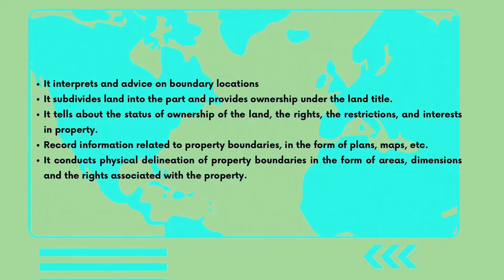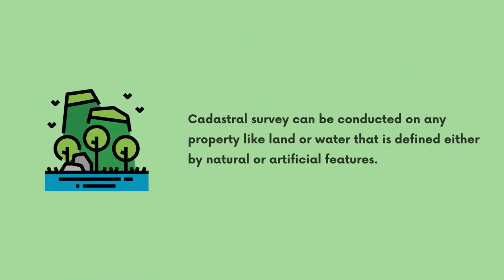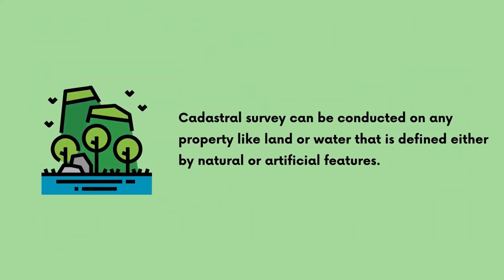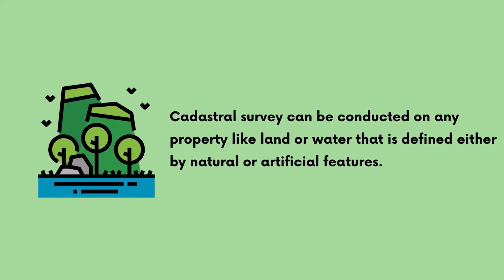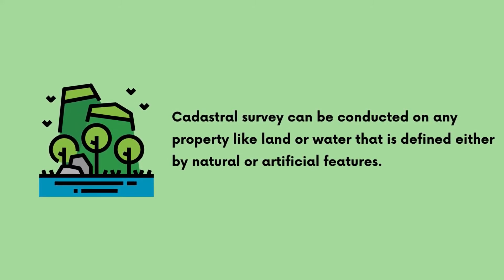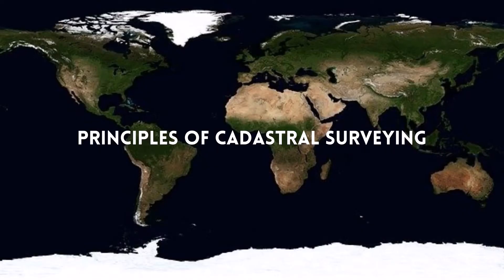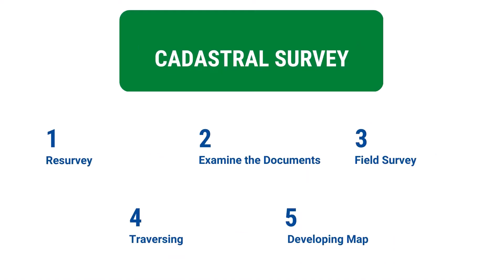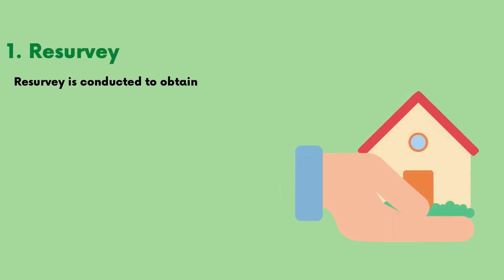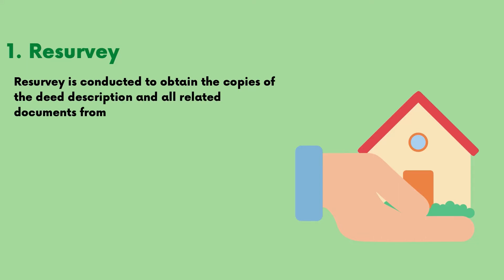Cadastral survey can be conducted on any property — like land or water — that is defined either by natural or artificial features. The main objective of cadastral survey is to determine the legal property boundary, which involves the following stages. Stage 1: Resurvey. Resurvey is conducted to obtain the copies of the deed description and all related documents from the owner. Deed description mentions all details regarding the deed.